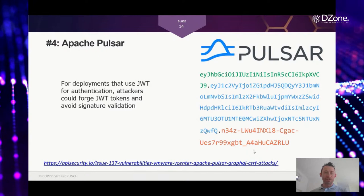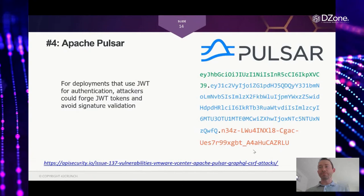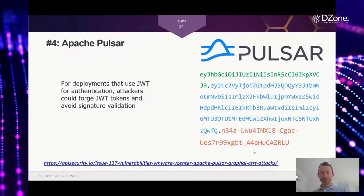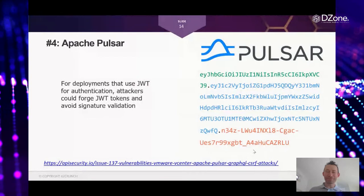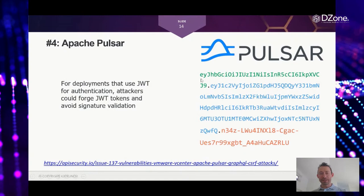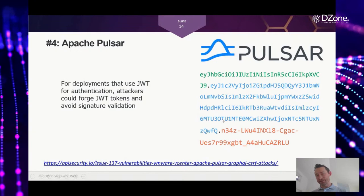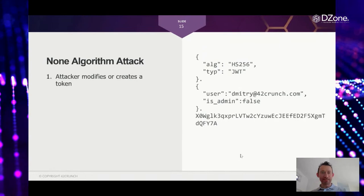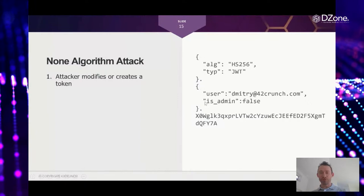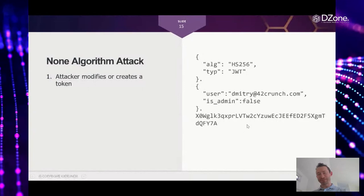The final vulnerability is in Apache Pulsar. For deployments using JWT (JSON Web Token) for authentication, attackers found a way to forge JWT tokens and bypass signature validation. A JWT looks like a base64-encoded header defining the token type, a body containing actual data, and a signature. The attack uses the 'none algorithm' attack: the header defines which algorithm is used for the signature, the body contains user information — for example, marking 'is_admin: false' — and the signature prevents forgery.